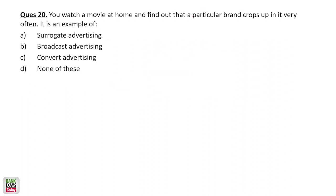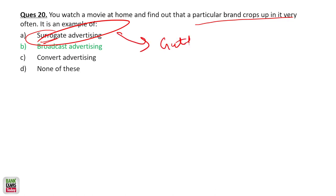You watch a movie at home and find that a particular brand crops up very often — that is broadcast advertising. What is surrogate advertising? Gutka ads are banned in India but gutka companies are very rich and want to promote their products. So what they promote instead is mouth fresheners, paan masala, or elaichi. They hire big film stars like Shahrukh Khan, Ajay Devgan, Amitabh Bachchan to promote their elaichi. Obviously they don't make money from elaichi — they make money from gutka. That is surrogate advertising — they promote flavored elaichi but their goal is to sell gutka.